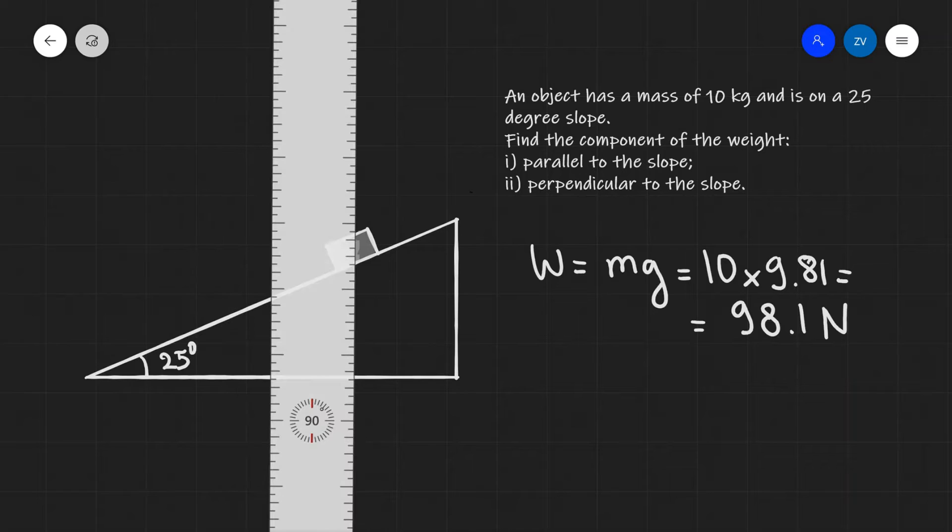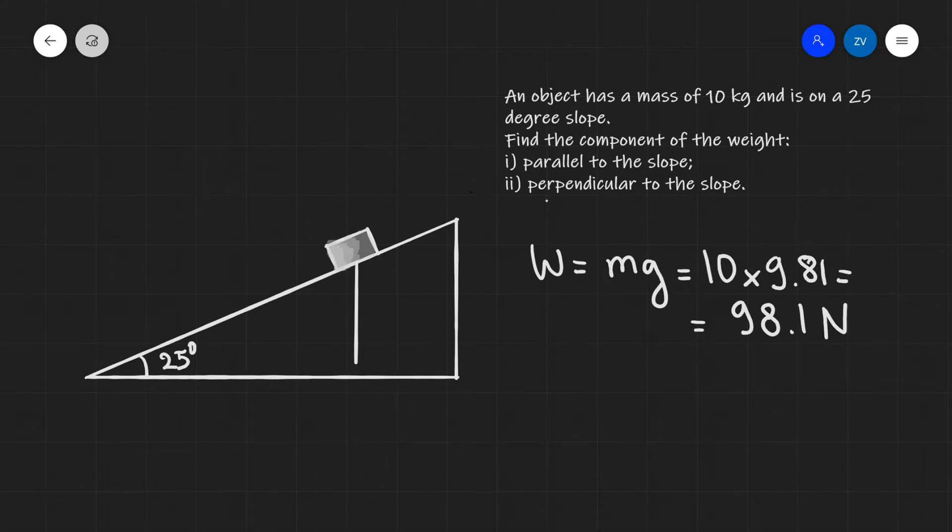Now let's draw this vector which will be acting straight down like so. So it's going to be 98.1 newtons vertically downwards.